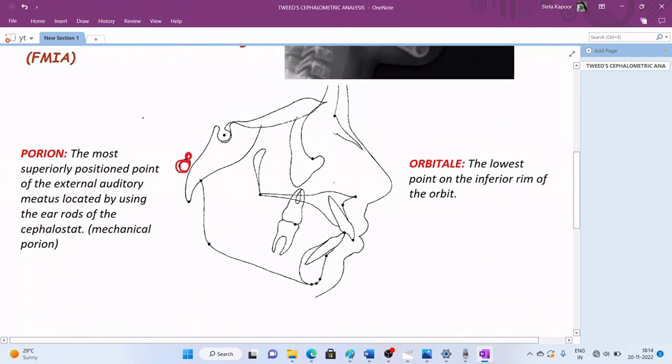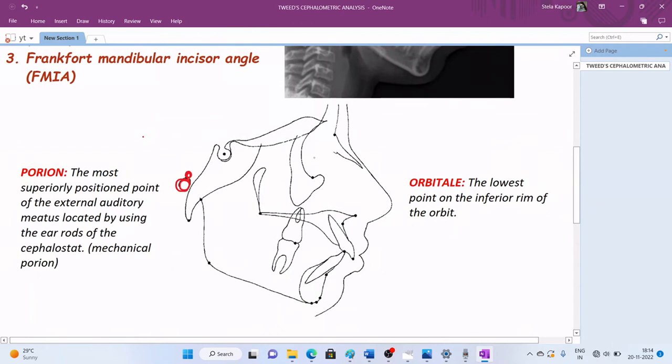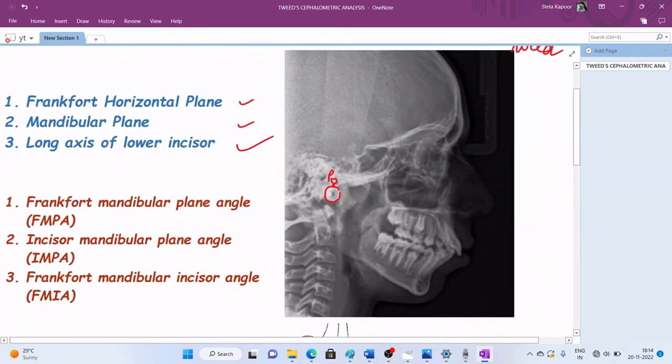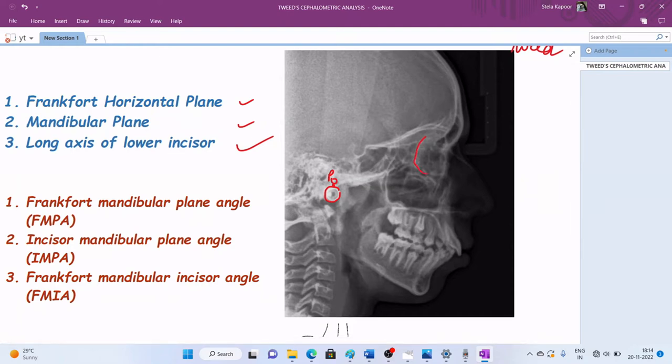Now for the second point, orbitale. This is the lowest point on the inferior rim of the orbit. This is our orbit rim, the inferior border, and this point is the most inferior point. In this cephalogram, we can make out this slightly radiopaque rim. The lowest point of this is the point orbitale.